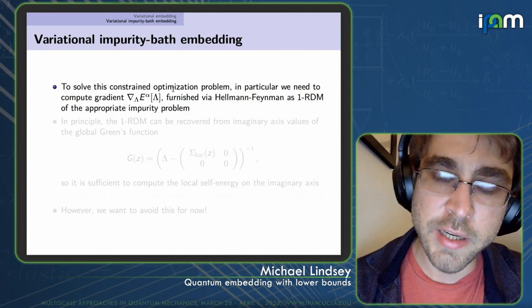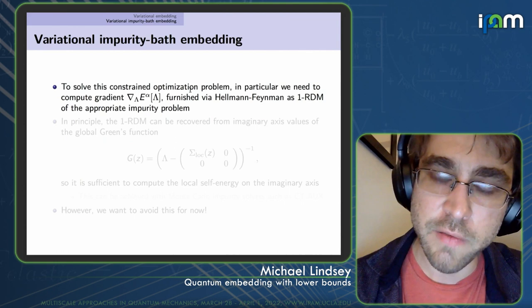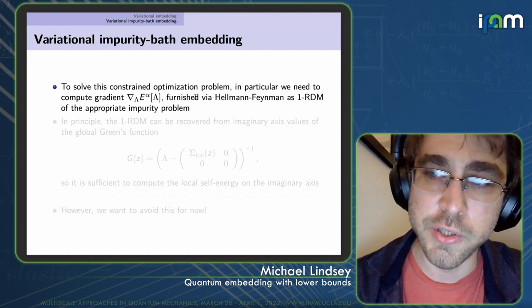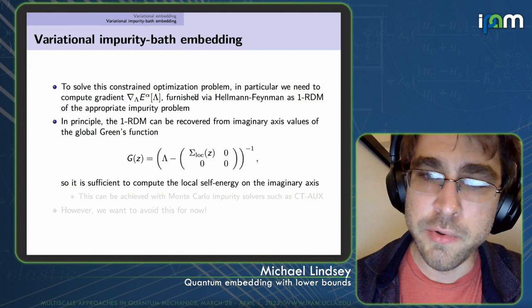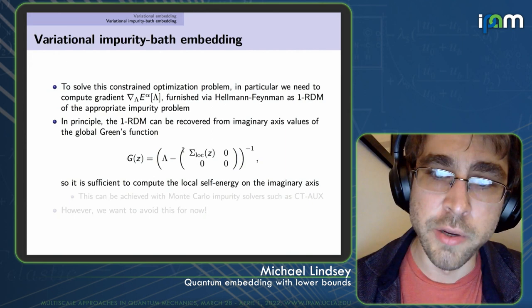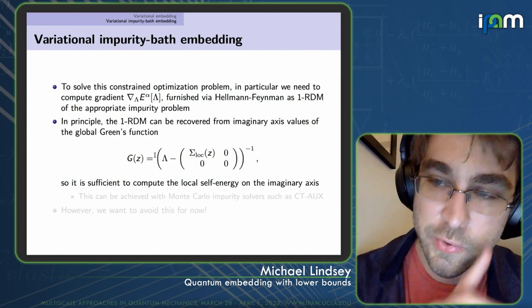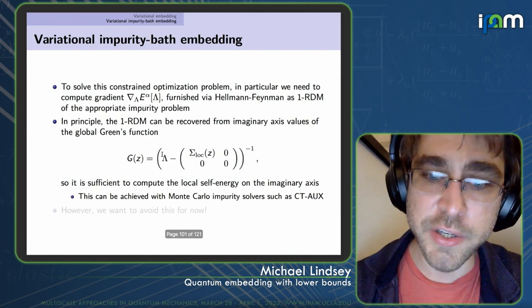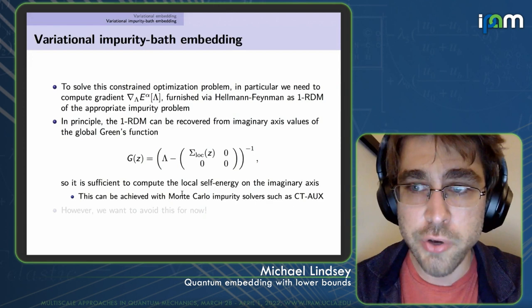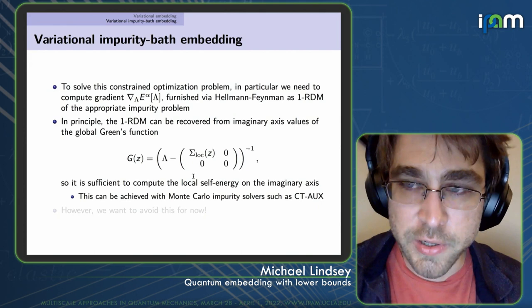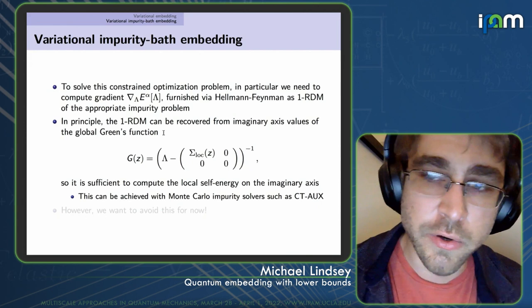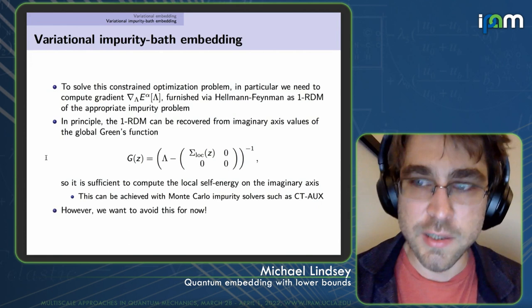To compute gradients (furnished via the Hellmann-Feynman theorem as the one-RDM of the corresponding impurity problems), we need not just energies but one-RDMs. In principle, these could be recovered from the Green's function of the impurity problem on the imaginary axis, allowing the use of continuous-time auxiliary-field Monte Carlo approaches. However, we explore an alternative approach that avoids this at the price of a further relaxation, enabling something more direct.